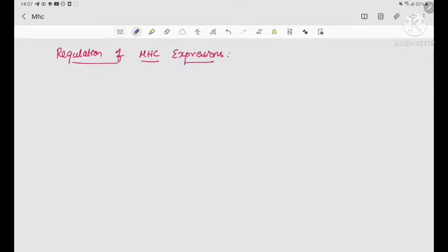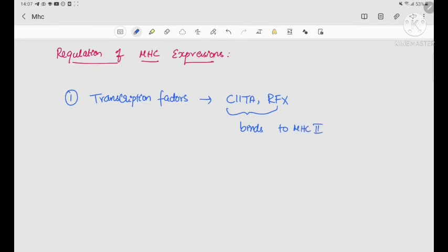Coming to the regulation of MHC expressions, first is the transcription factors. The transcription factors like CIITA and RFX both bind to MHC 2 promoter genes and thereby increase the transcription. The defect in these genes leads to bare lymphocyte syndrome.